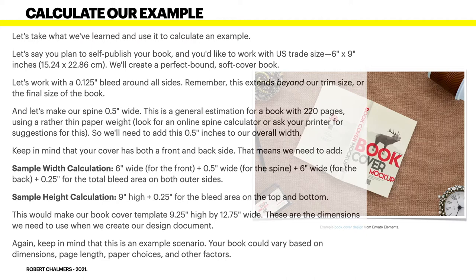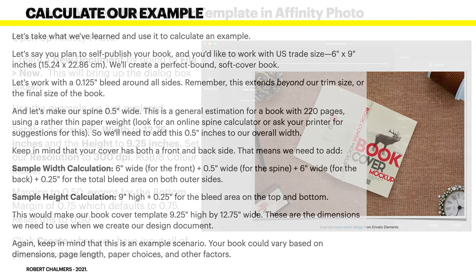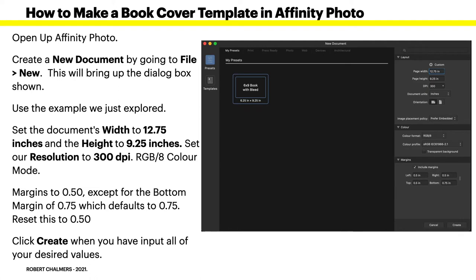For example, if your cover is five inches wide and eight inches high, you'd add five inches wide plus 0.5 for the spine plus five inches for the back and 0.25 for the total bleed — you just add the pieces together. What we do in Affinity Photo is open up Affinity Photo, create a new document by going to File > New, then set the document width to 12.75 inches and height to 9.25 inches, and set the resolution to 300 DPI.